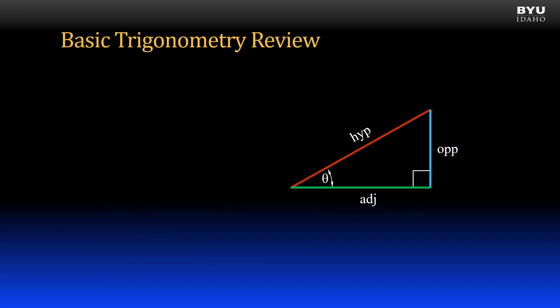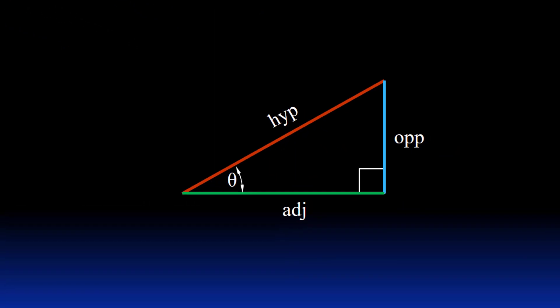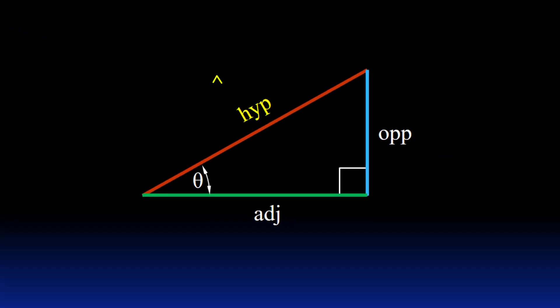Now, to find these components analytically, we need some basic trigonometry tools. Everything here is based upon right angles. In a right triangle, the hypotenuse is the side opposite the right angle.